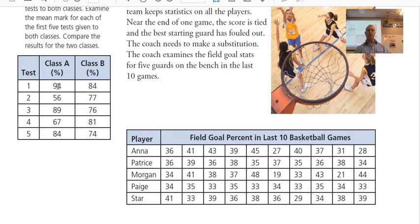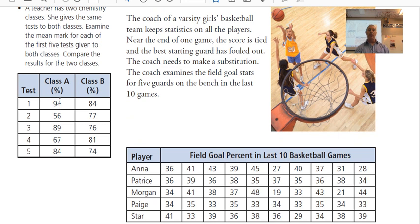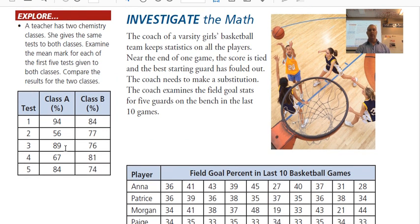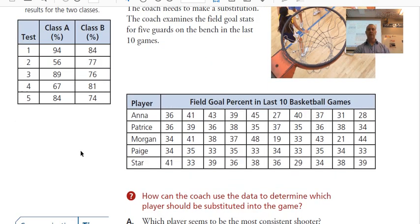So again, if we look at marks, here's an example where we have different marks on chemistry classes. If you look at class A, the range is from about 56 to 94. The range here is from 74 to 84. So the range is quite narrow here, quite small, and the range here in class A is quite large. They may have the same average, but it's the standard deviation that tells us about the dispersion.